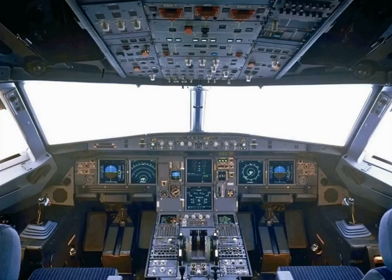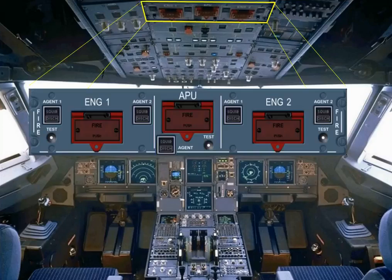As soon as the APU bleed push button switch is set to ON, the green APU bleed memo replaces the APU AVAIL memo on the engine warning display. This indicates that the APU bleed valve is open with bleed air pressure available. The APU fire controls are installed on the fire panel. For additional information, refer to the ATA-26 fire protection chapter.